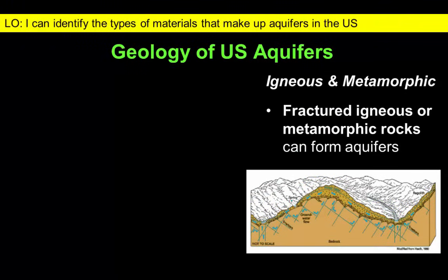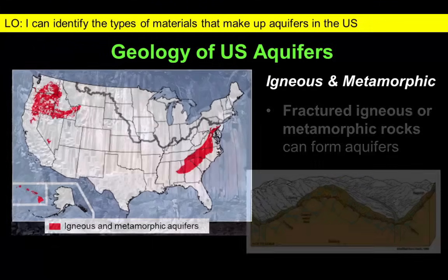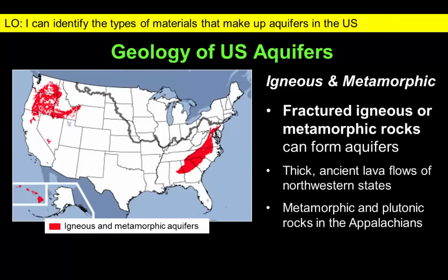Finally, igneous and metamorphic rocks should not be good aquifers, as they contain no natural porosity or permeability. However, these rocks are often fractured during their formation or during episodes of tectonic activity. Fractured lava flows in Oregon, Washington, and surrounding states, and fractured crystalline igneous and metamorphic rocks in the Appalachians, are two examples of these rock types that can result in productive aquifer systems.